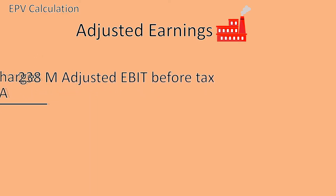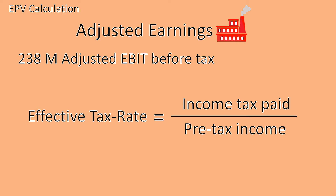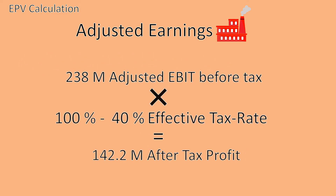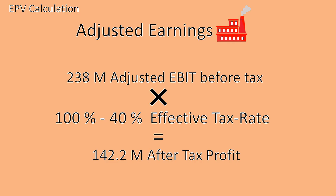Next is tax. We need to figure out the effective tax rate of our company. We take a look at the income statement and find pre-tax income and income taxes paid. To get the effective tax rate, we simply need to divide taxes paid by pre-tax income. In our example, we have an already calculated rate of 40%. We now multiply our adjusted EBIT before tax with one minus the effective tax rate. This gives us an after-tax profit of 142.2 million.